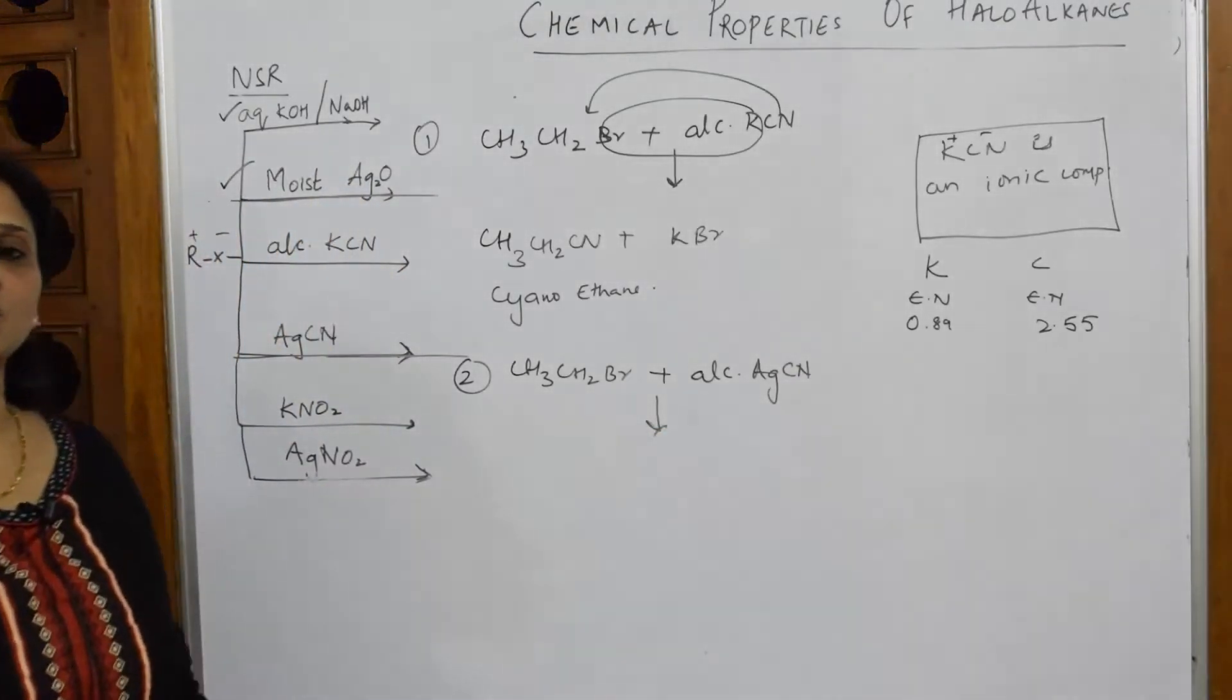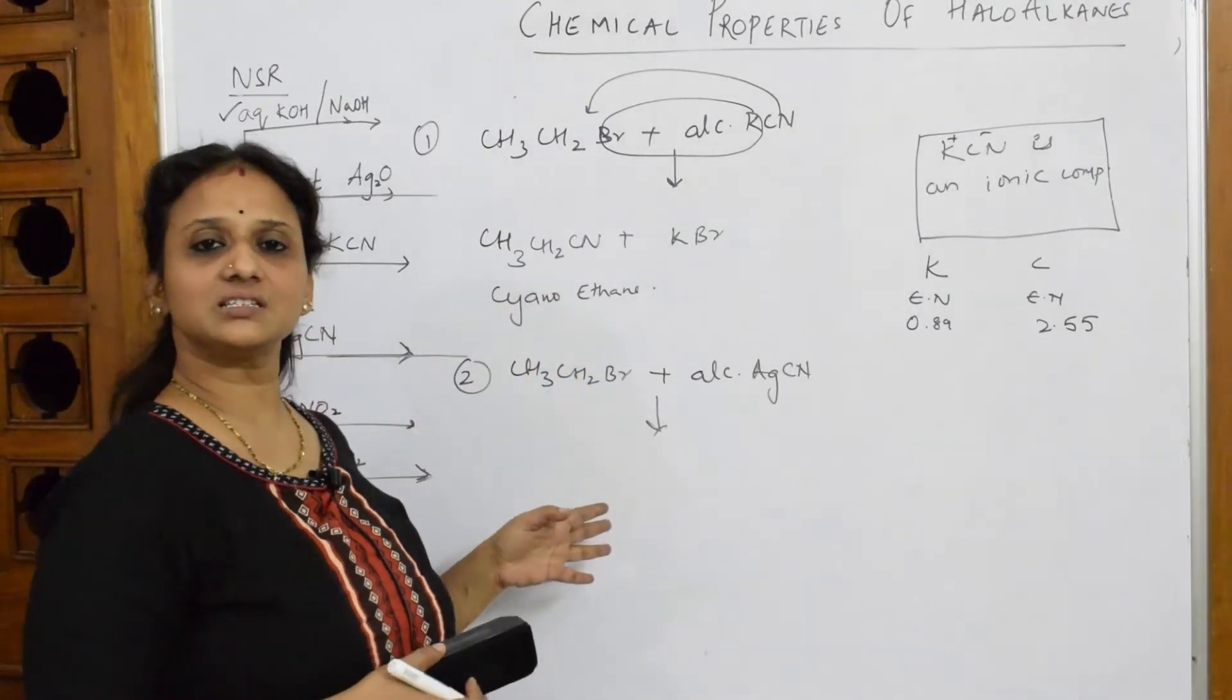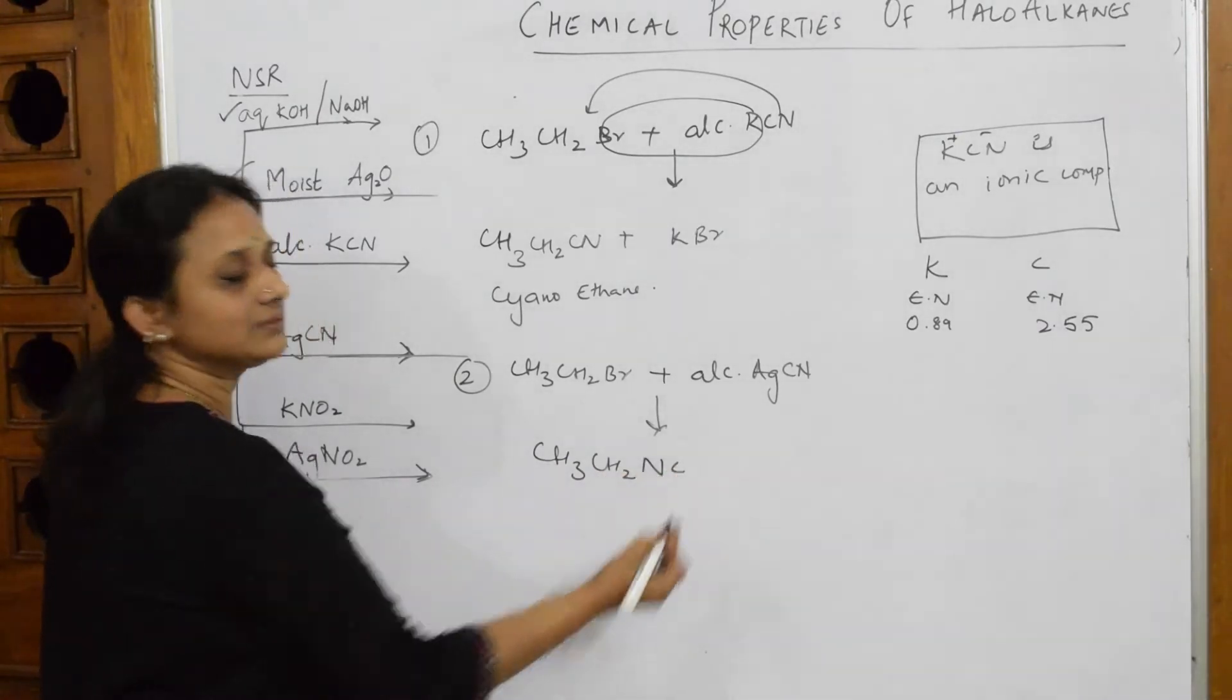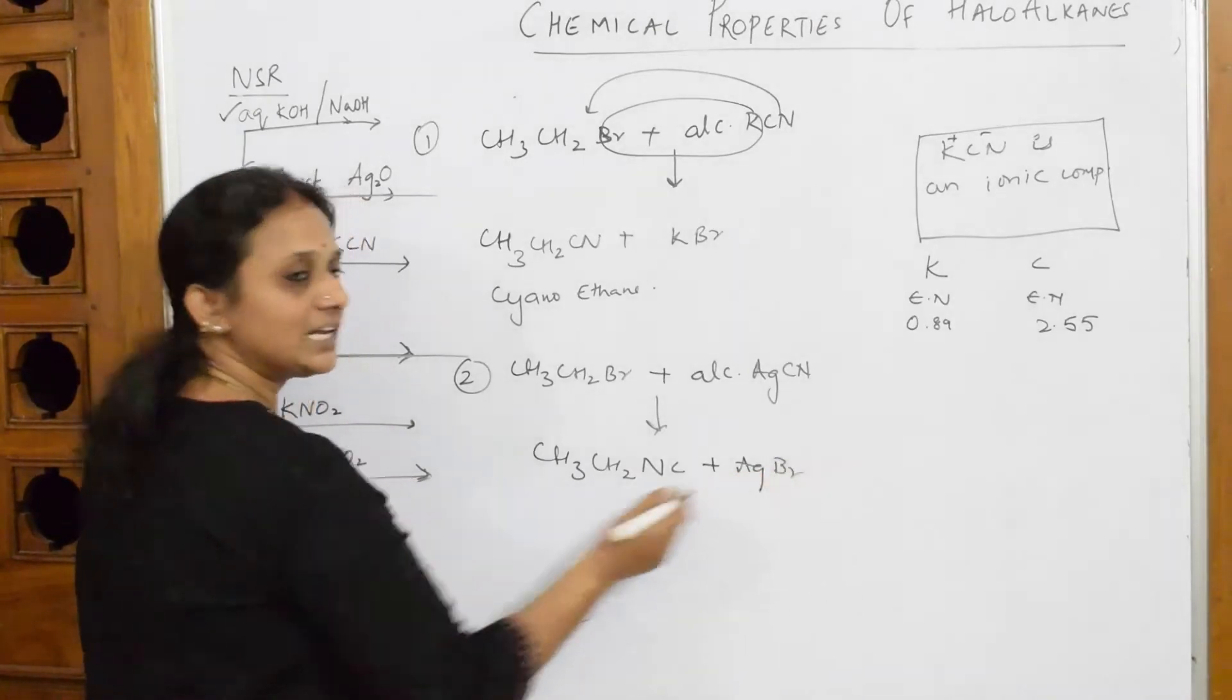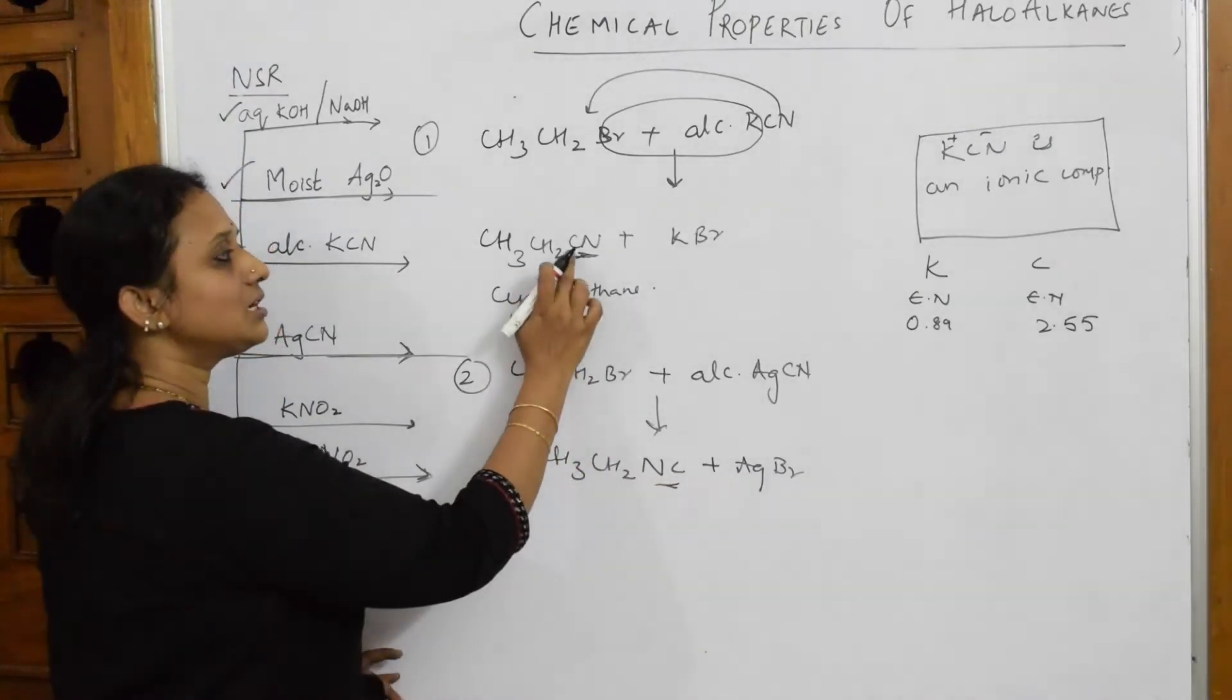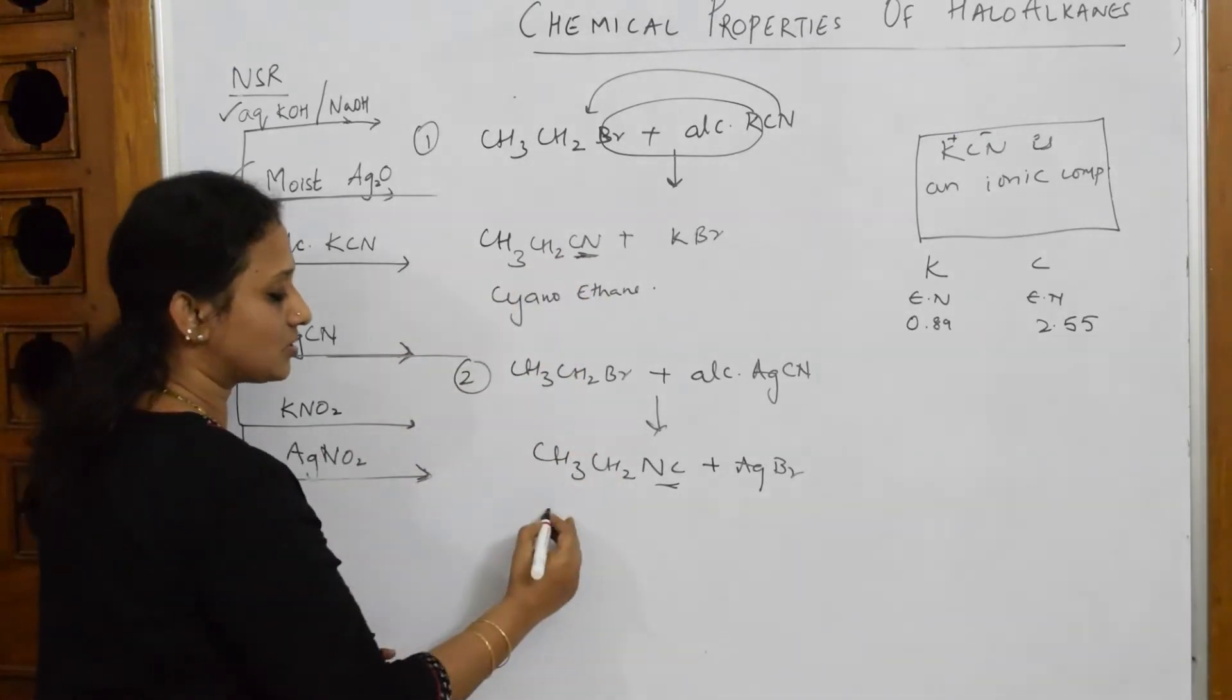Immediately, what is general tendency of any student? If KCN is giving me CH3CH2CN, AgCN also obviously has to give me CH3CH2CN. Wrong! AgCN will give you a product called CH3CH2NC, and your AgBr is out. How do I name this? This is CN here, this is NC here.